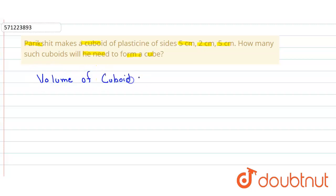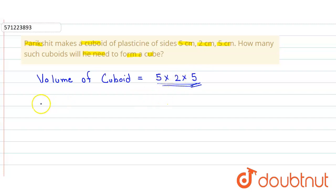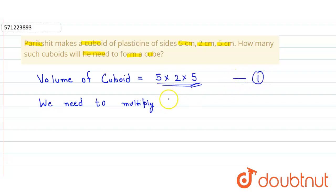The volume of the cuboid will be equals to 5 into 2 into 5. So here we observe that this is not in the form of a cube. So we have to multiply some additional number to make this given number a perfect cube. So we need to multiply — consider this equation to be number 1.